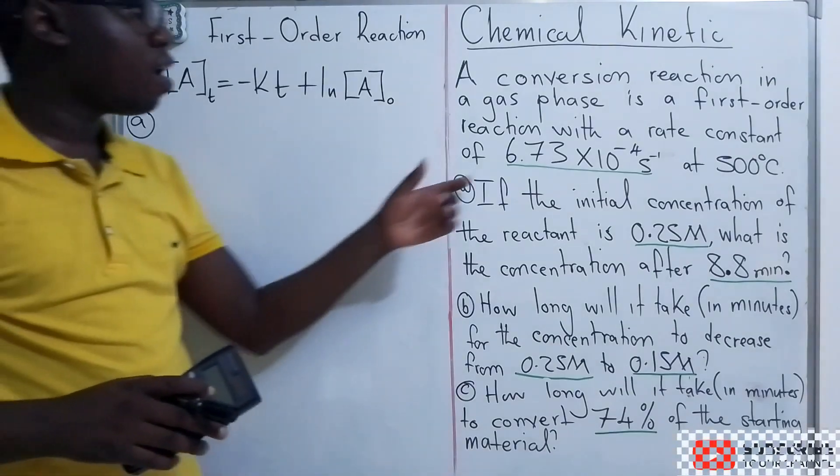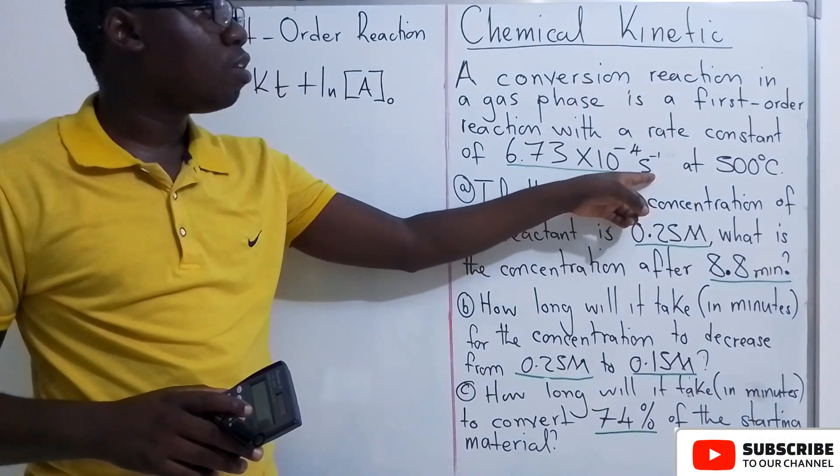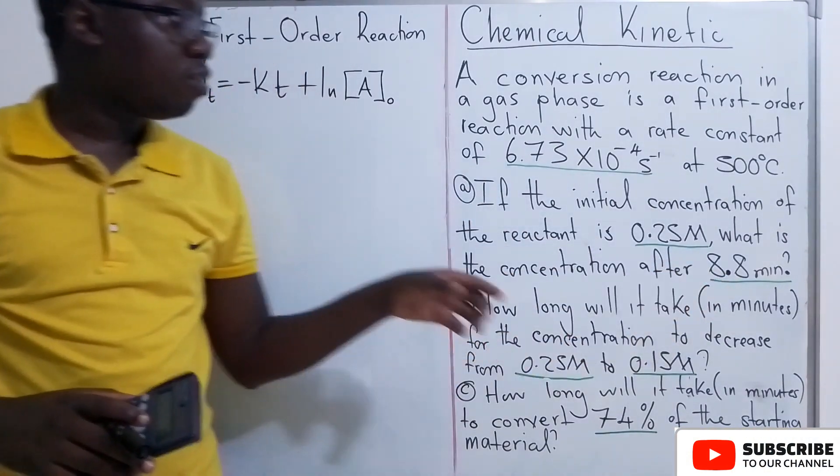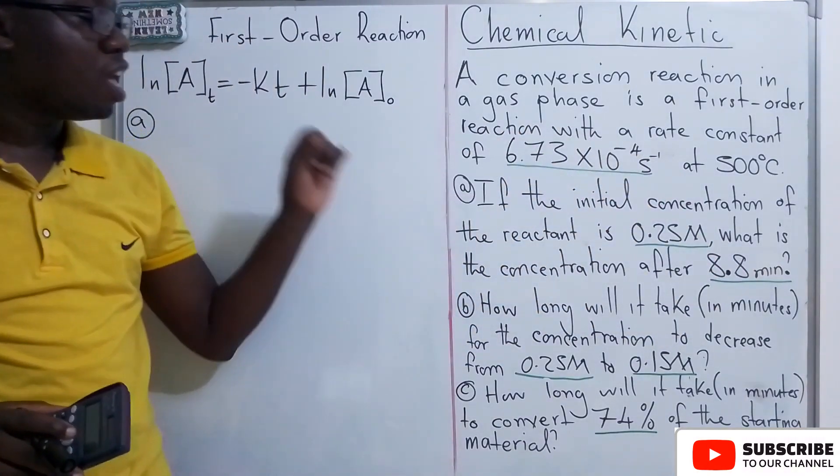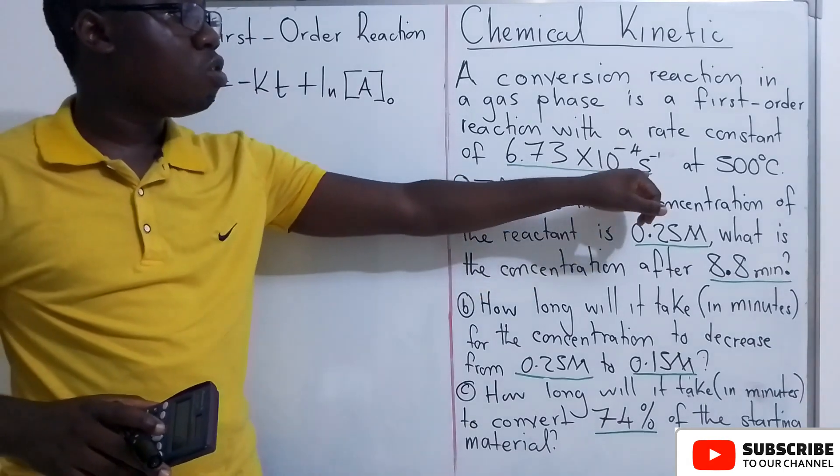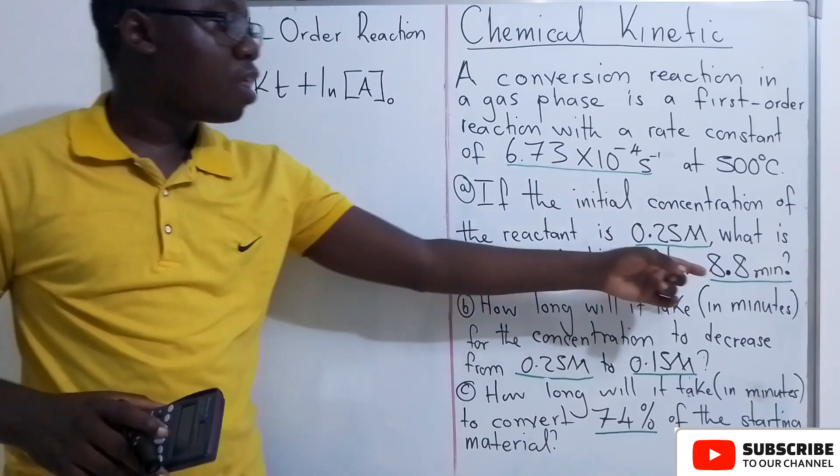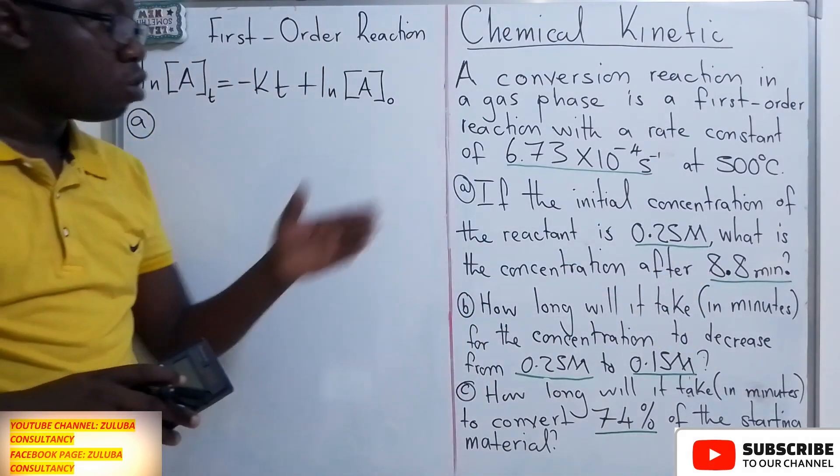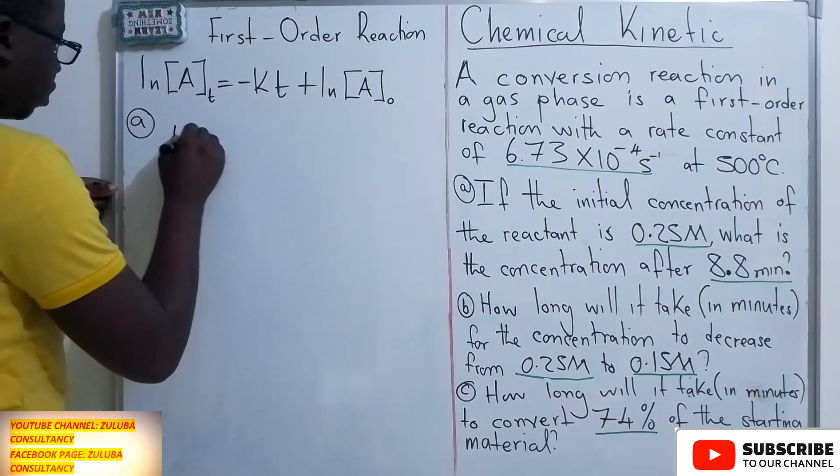Now when you look at the rate constant, the unit is in seconds. The time we have been given is in minutes. So the first thing you do is to convert these minutes into seconds so that the units are the same. You need to look at the units of the rate constant, then it will guide you to see whether you need to convert this time or not.